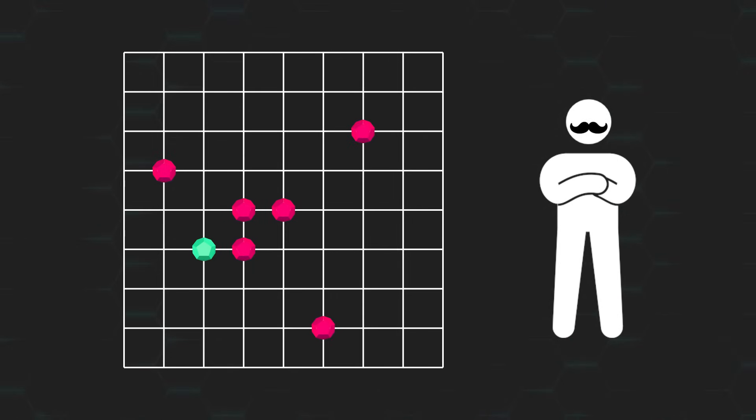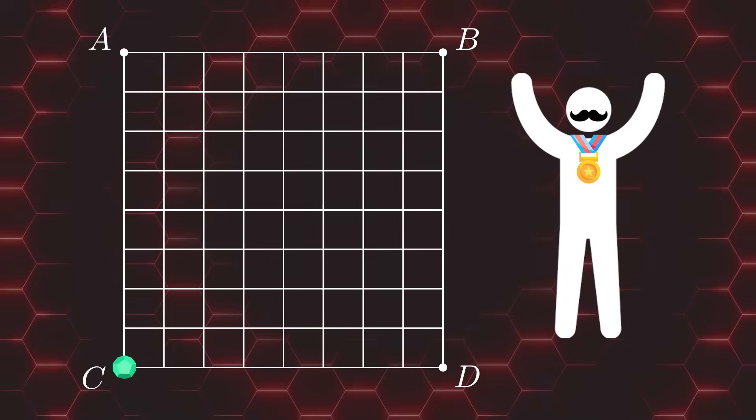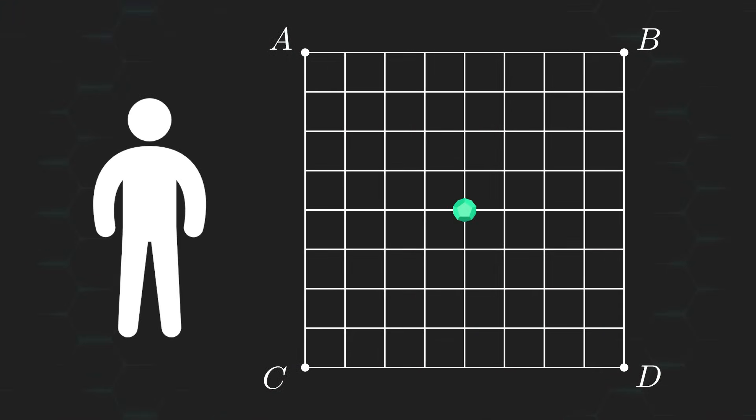My goal is to force you to move the greenstone into one of the corner intersections, which we'll label A, B, C, and D. If this ends up happening, then you lose the game. However, you'll win the game if we reach a point where you're unable to move the greenstone anymore, with it not being on a corner intersection, of course.